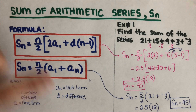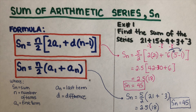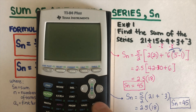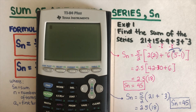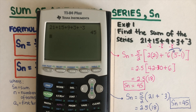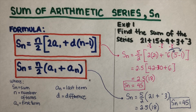Let's use the calculator to verify. We compute 21 plus 15 plus 9 plus 3 plus negative 3, and the answer is 45 — it's a match. Let's move on to the second example.